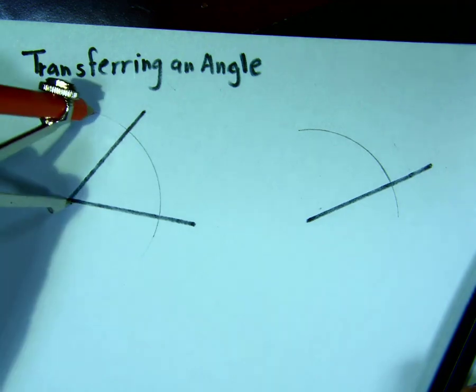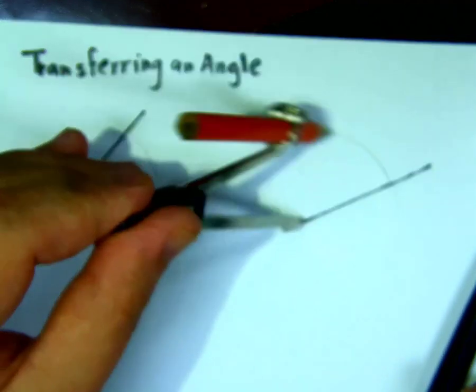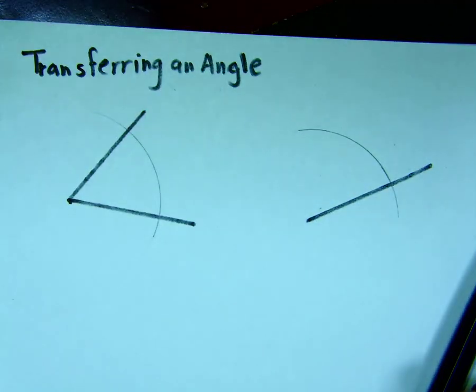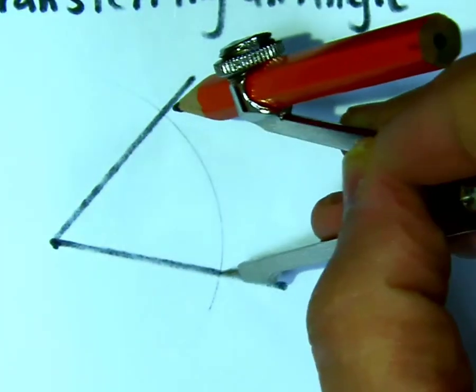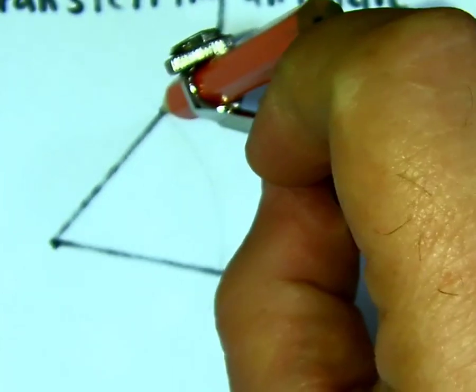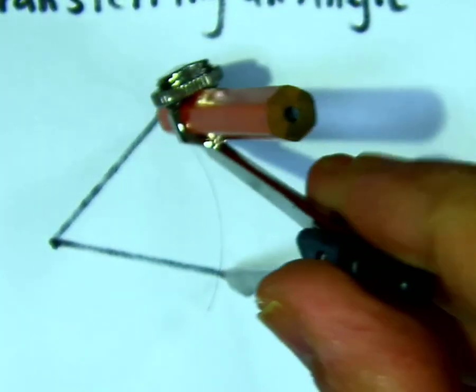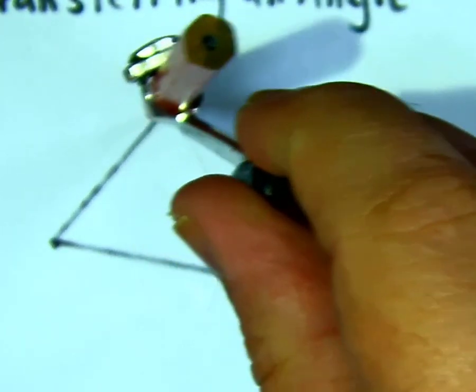Move the compass here and draw the same arc. Now bring the compass and measure from this intersection to this intersection. Draw a small arc just to be sure that you are on the intersection. If you're at the intersection, come here, put it at this point, and draw.